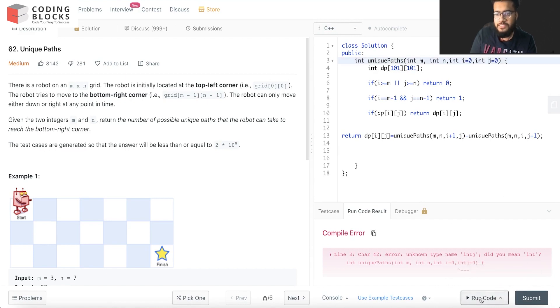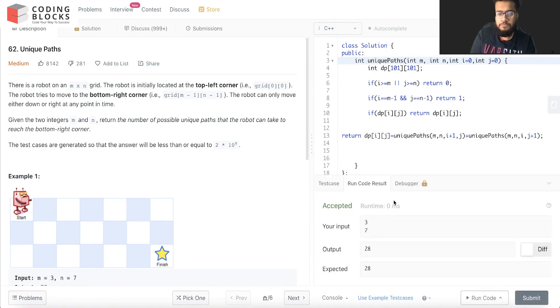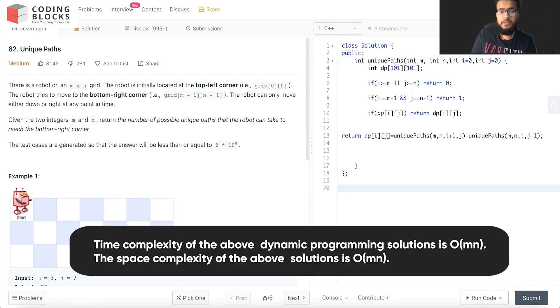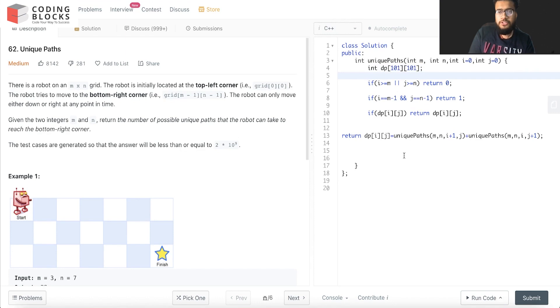Okay, just a spacing issue. So it got accepted. The overall time complexity will be Big O of m into n, that is n squared kind of time complexity, and the space complexity will be the same because we have initialized the DP array. So I hope you guys have understood this one. Try to submit this and we'll meet you in the next section. Thank you.